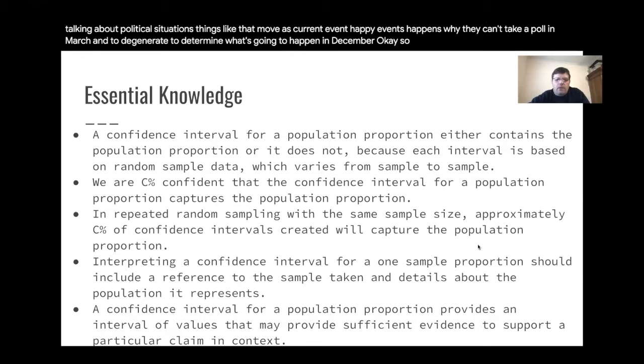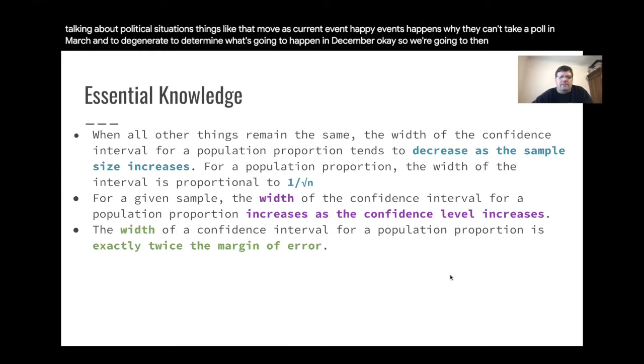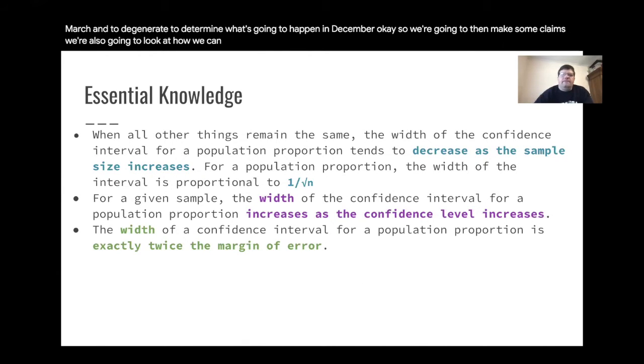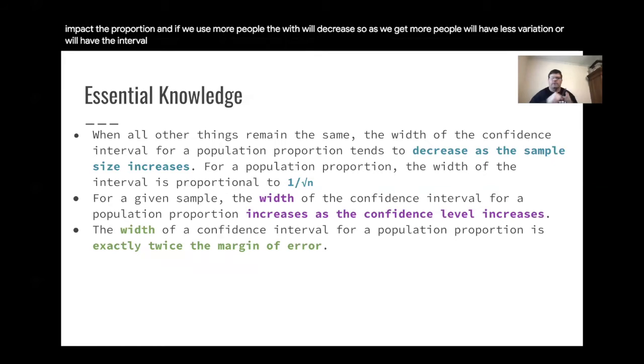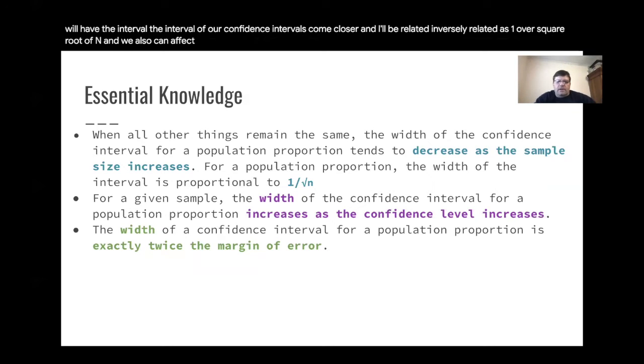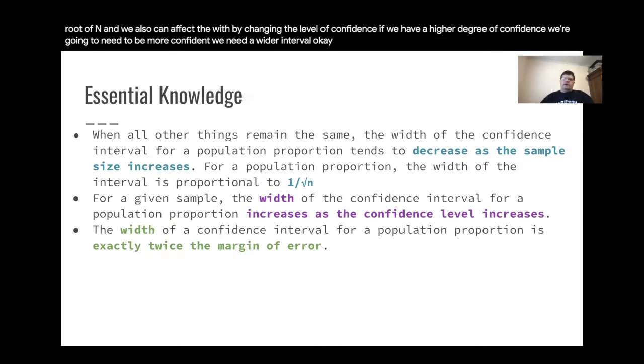We're going to make some claims. We're also going to look at how we can impact and change the width of the confidence interval. If we change the sample size, we can impact the proportion and if we use more people, the width will decrease. So as we get more people, we'll have less variation or the interval of our confidence intervals come closer. And it'll be related inversely as one over square root n. We also can affect the width by changing the level of confidence. So if we have a higher degree of confidence, we're going to need to be more confident, we need a wider interval. So as the confidence level goes up, the width of the interval goes up.